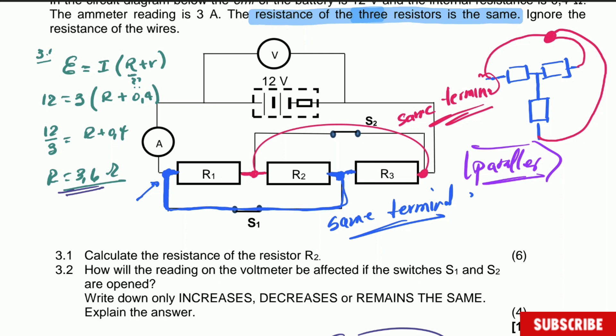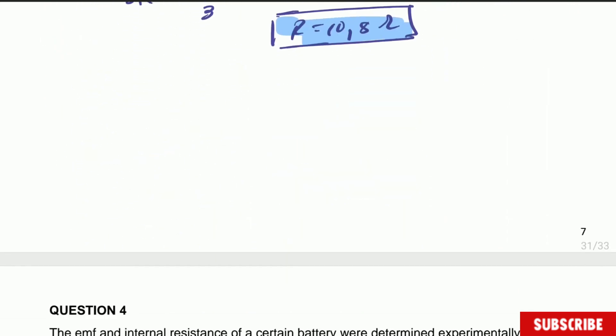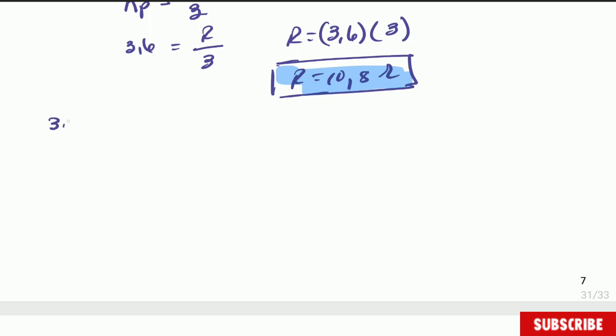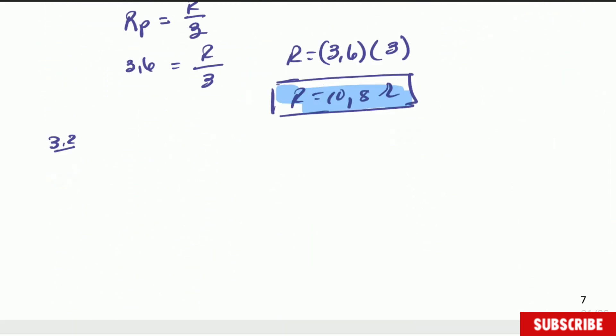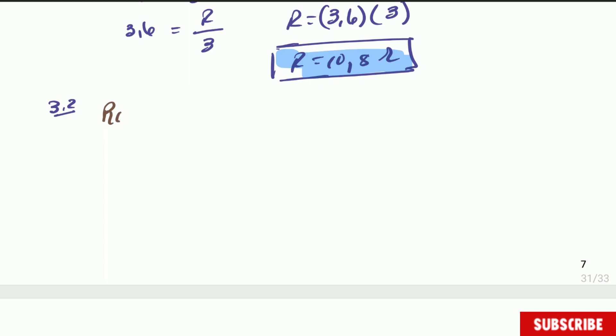Moving to question 3.2: how will the voltmeter reading be affected if switches S1 and S2 are open? If the switches are open, then the whole connection is going to be in series, and therefore the total external resistance will increase. When switches are open, the connections are in series — all of them connected one next to another, with one path for the current to flow. Therefore the total external resistance increases.